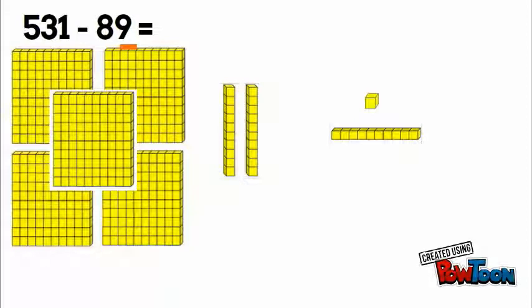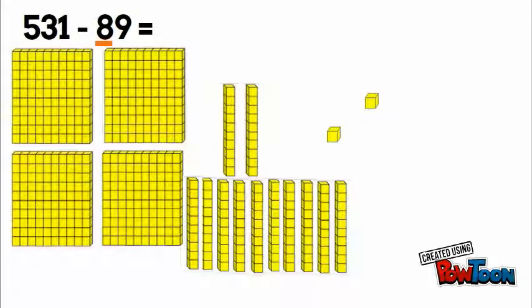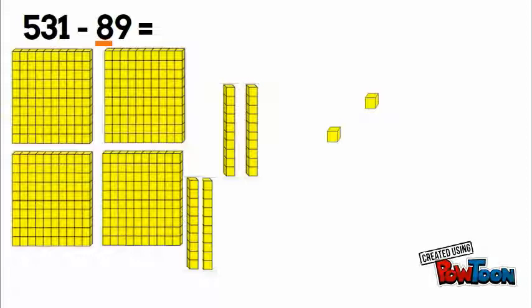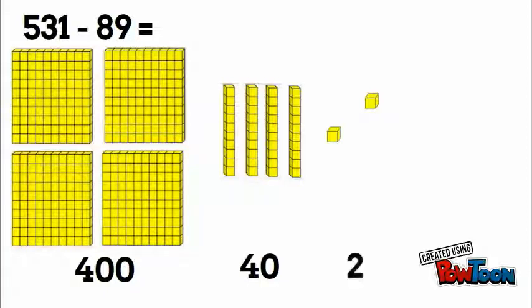We're going to take one of our tens and turn it into ten ones. Now we can take away nine ones. Next we have to take away eight tens. We only have two tens, so we borrow 100 and unbundle it into ten tens. Now we can take away eight of them. There's no hundreds to take away, so now we have our answer: 400, four tens which is 40, two ones, so our answer is 442.